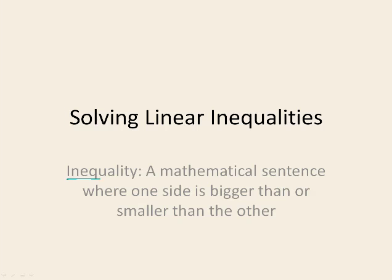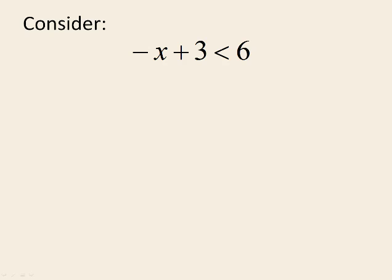An inequality is a mathematical sentence where one side is either bigger than or smaller than the other side. So we're not dealing with two sides which are the same as we would in an equation where the two sides are equal. If we take a look at an inequality like negative x plus 3 is less than 6, we know this side is less than because the pointed end faces the left-hand side. So the left-hand side is less than, and 6 is bigger than negative x plus 3.